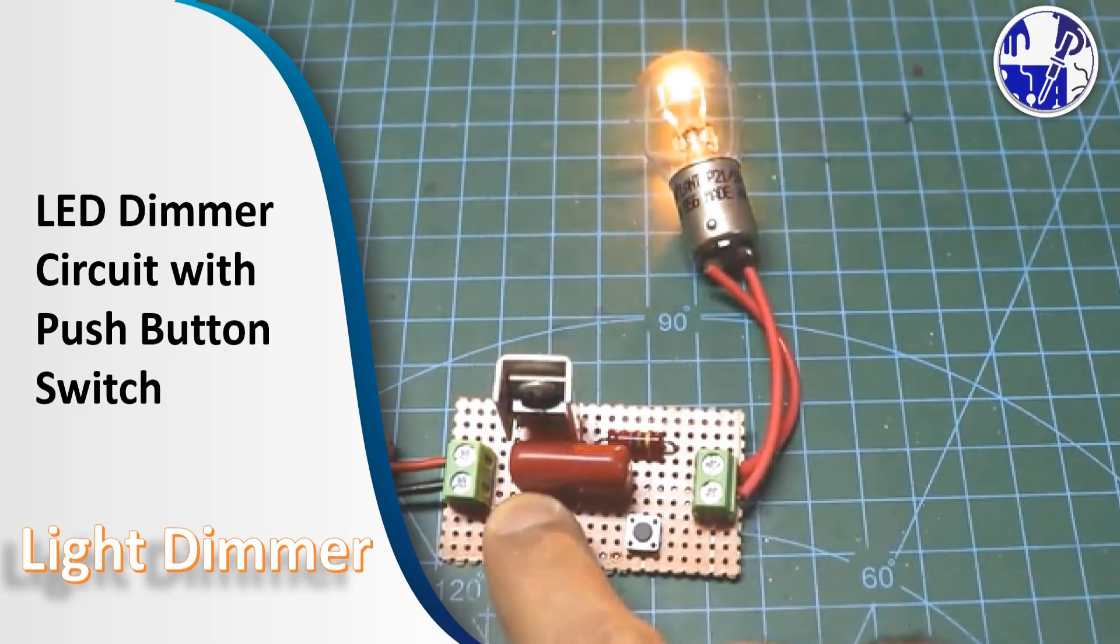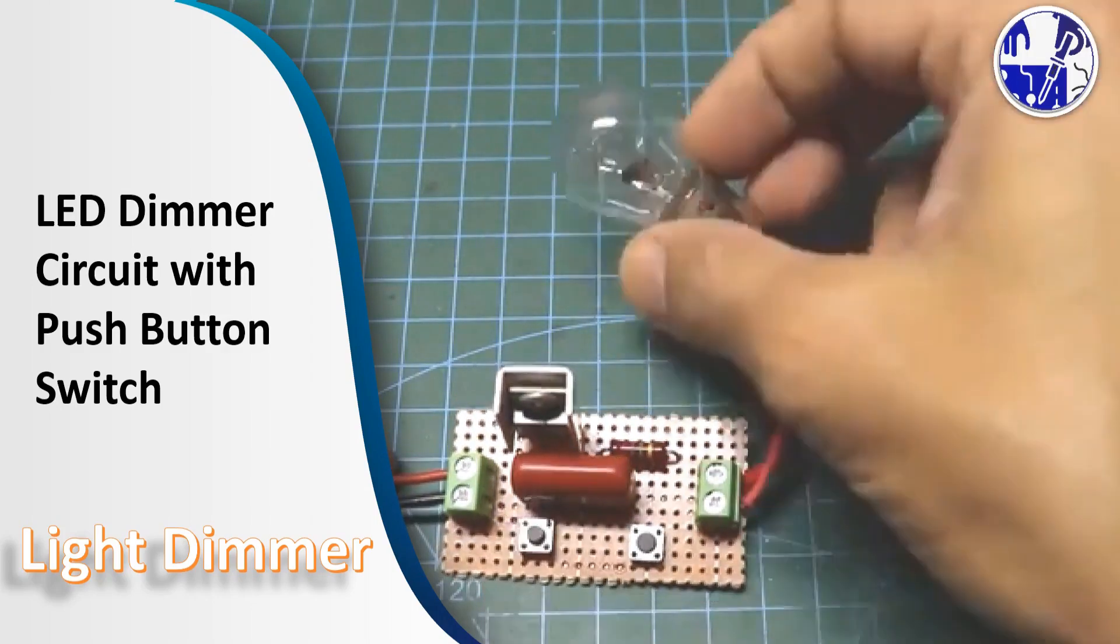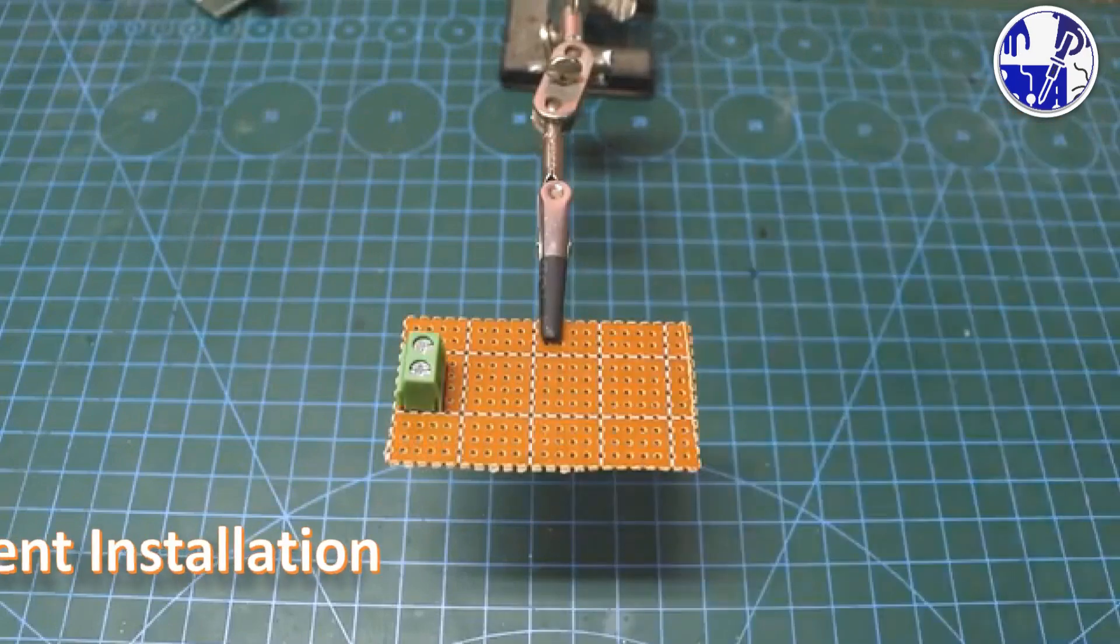In this video, I am going to show you how to create a simple yet effective 12-volt light dimmer using readily available components.